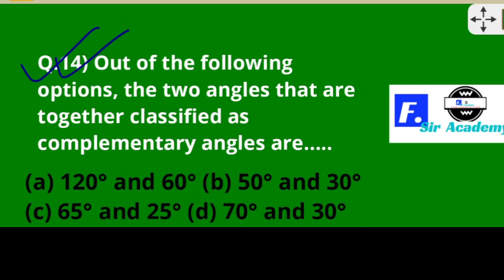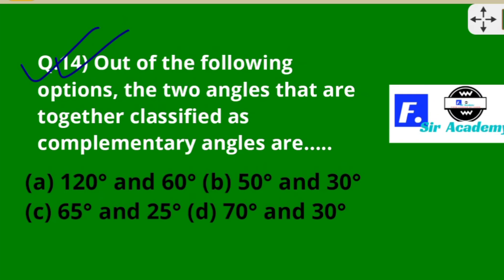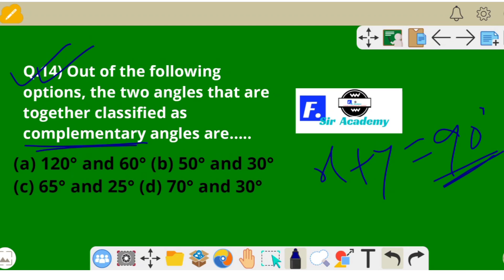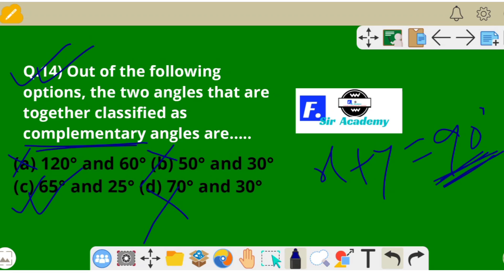Question 14: which pair of angles are complementary? Complementary angles means x + y = 90°. Checking: 120° + 60° = 180° — no. 50° + 30° = 80° — no. 70° + 30° = 100° — no. 65° + 25° = 90° — yes. So option C is correct.